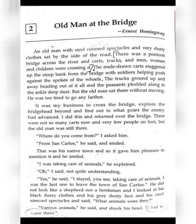He did not look like a shepherd or a horseman. The narrator looked at his black dusty clothes, his gray dusty face, and his steel-rimmed spectacles and said, 'What animals were they?' Again he specifies the old man's appearance — dusty clothes, gray dusty face, steel-rimmed spectacles. Notice that no bright colors are mentioned anywhere — all gray, black, white — signifying a gloomy environment that the author has deliberately created.